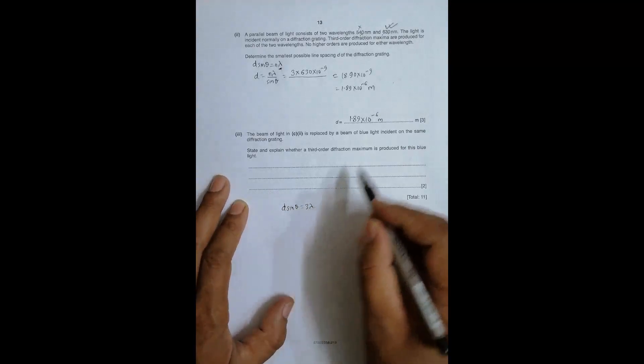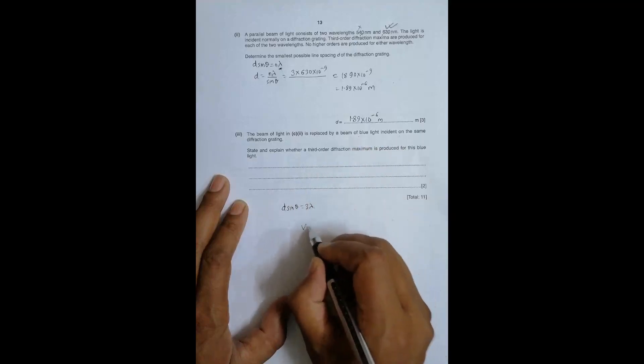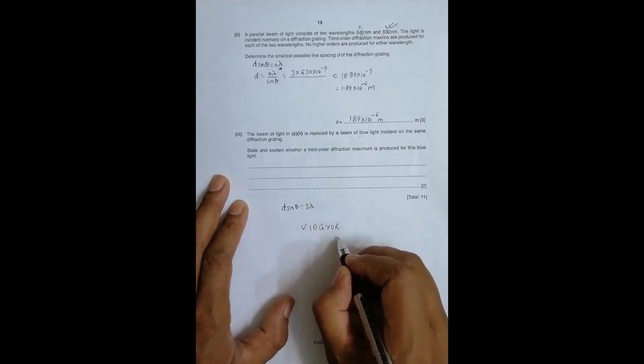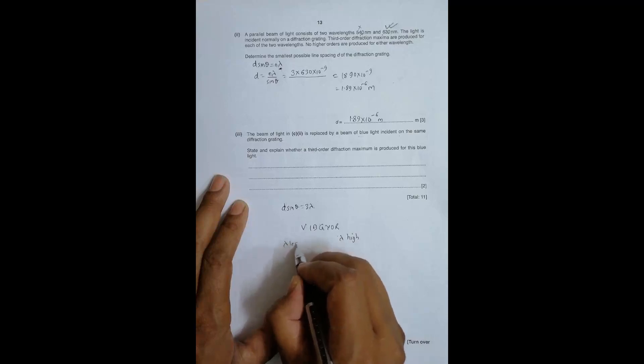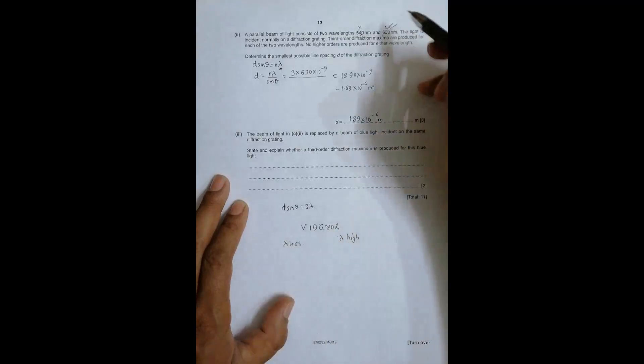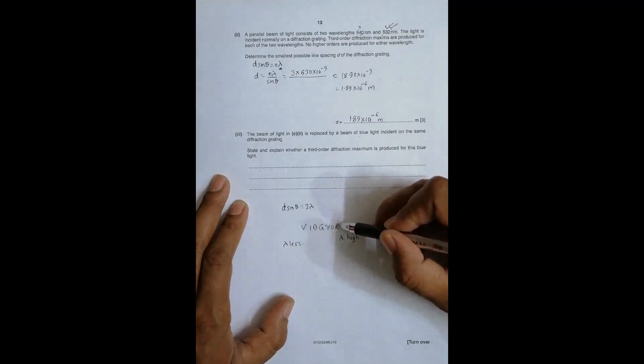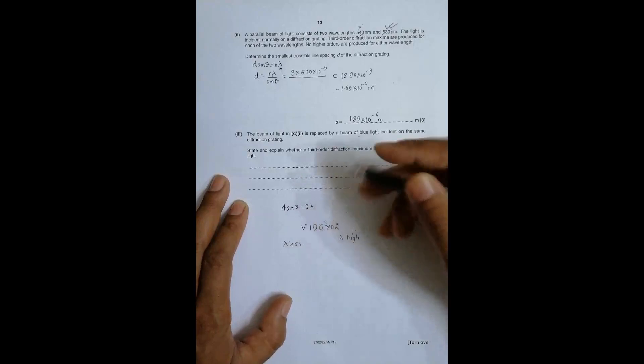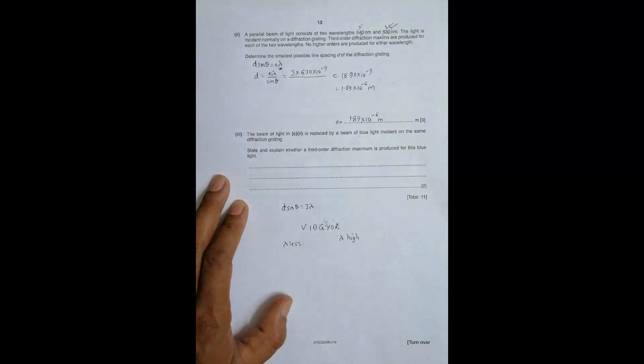If blue light is used, what happens here is if I go through this range: V, I, B, G, Y, O, R - in case of R, lambda is high, and in case of V, lambda is less. Now we have 630 nanometers which is almost red or orange, and 540 is around green or yellow. Let's say yellow is between green and yellow. We cannot actually distinguish where something ends since color is continuous.